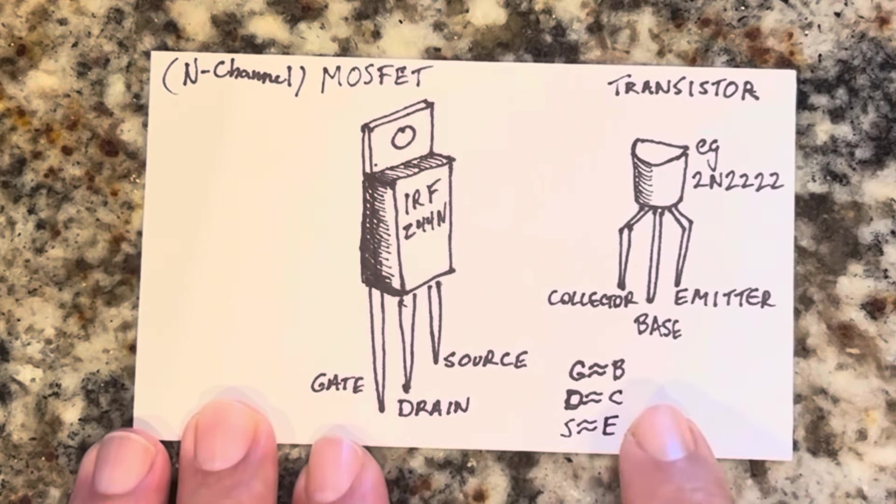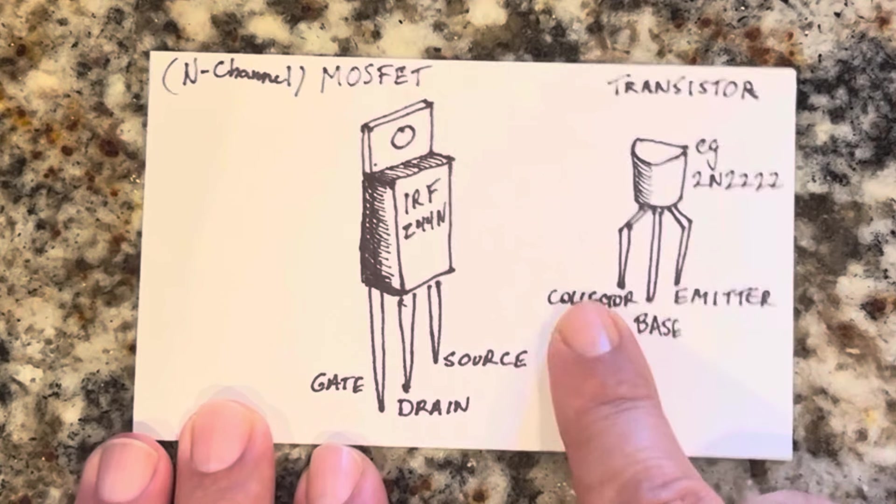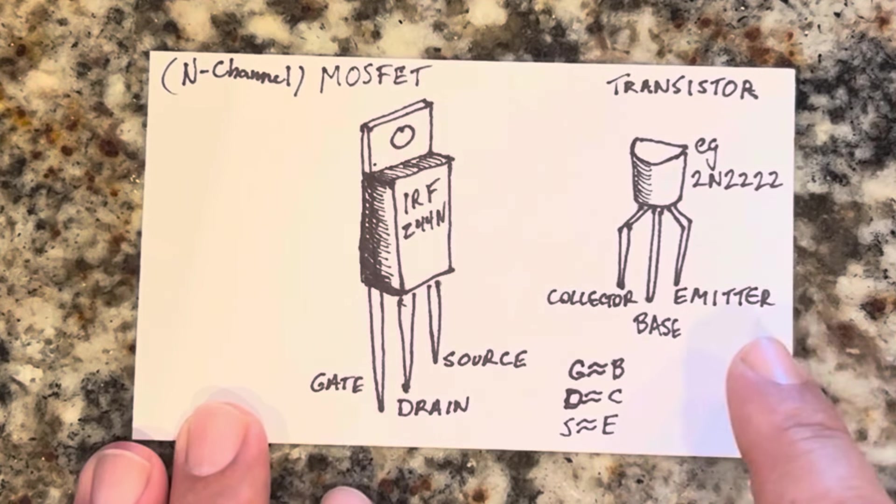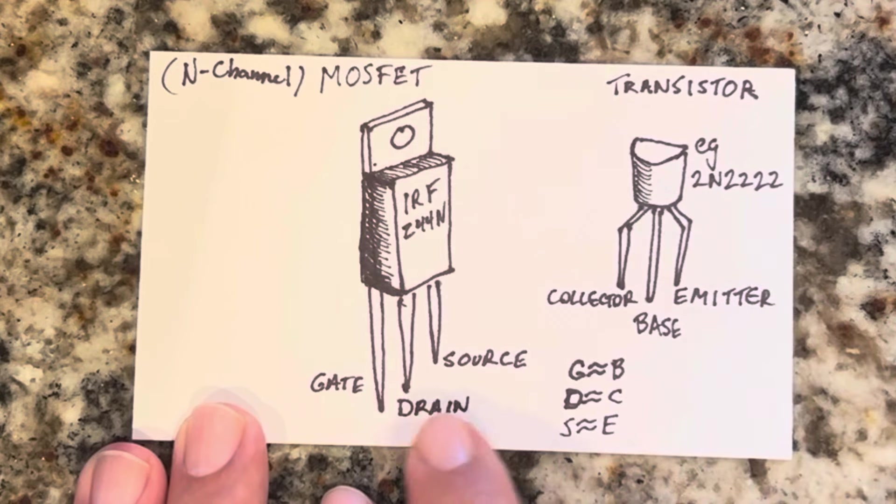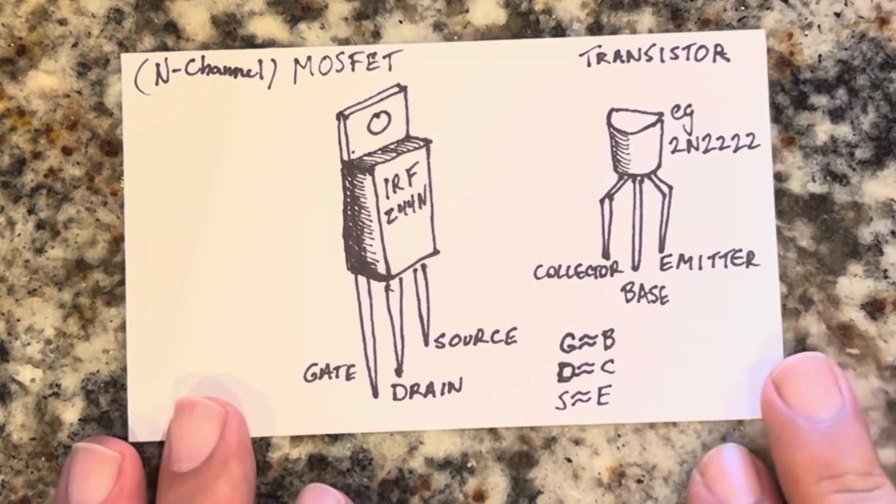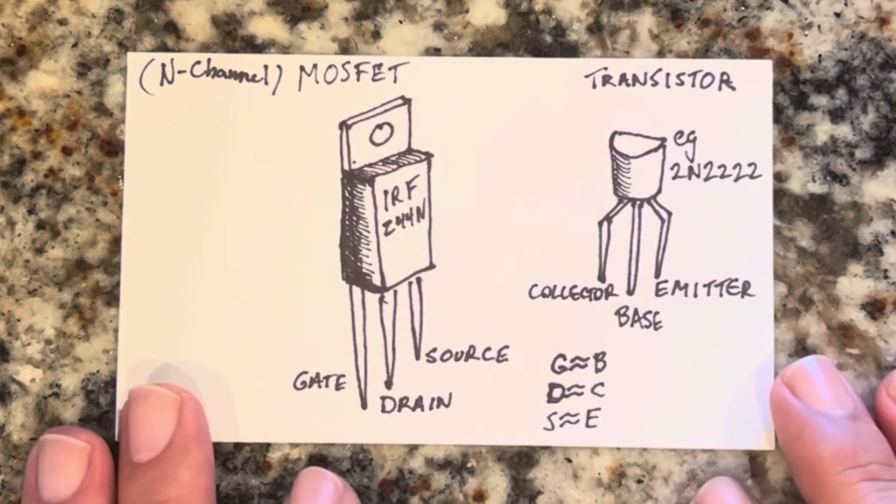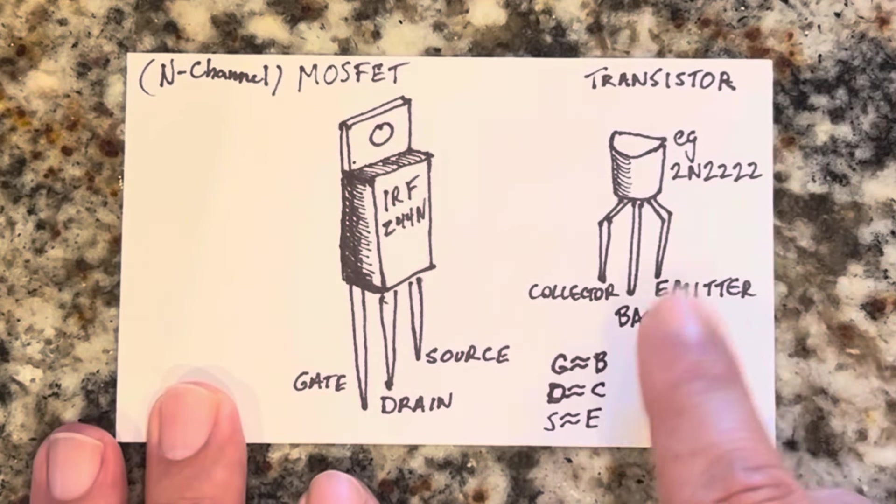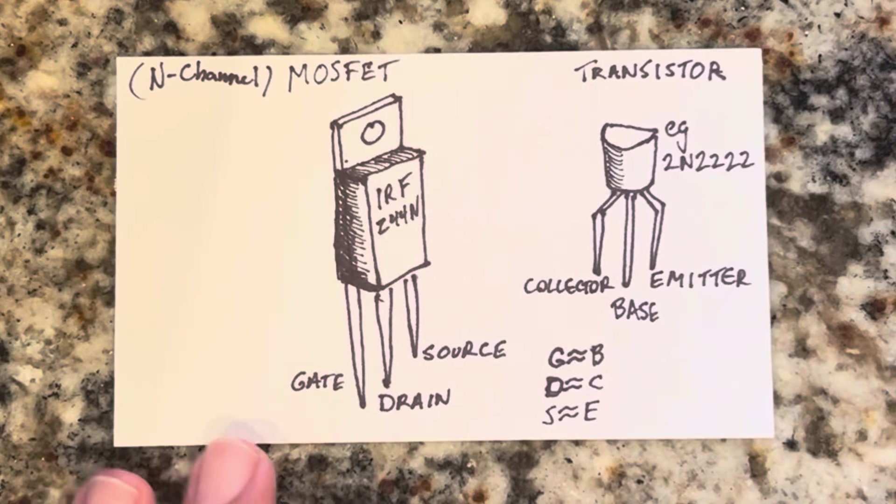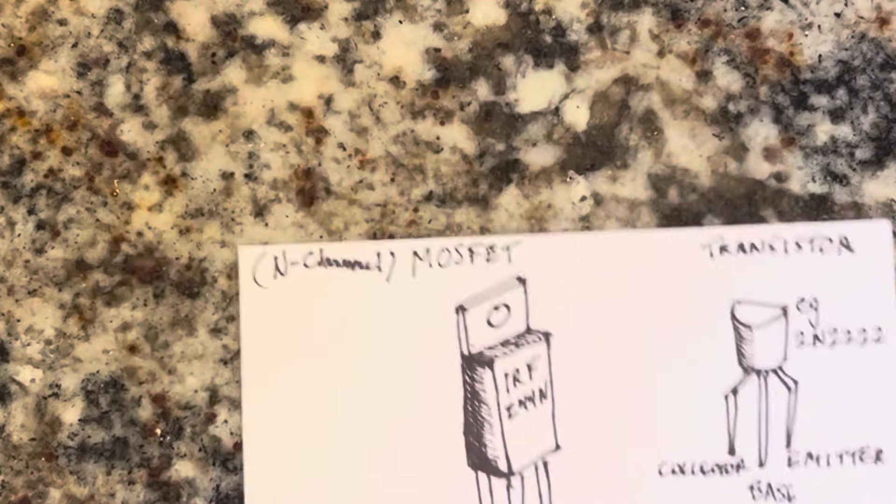The drain can be viewed as the collector, the source can be viewed as the emitter. It usually gets connected to some ground or the output, drain is the input, and the gate is the switch signal that turns it on and off. Unlike a transistor, this is triggered by voltage and not current, and it has a few little other caveats.